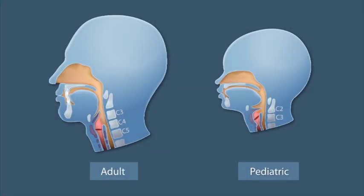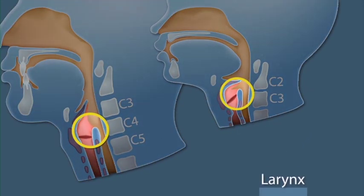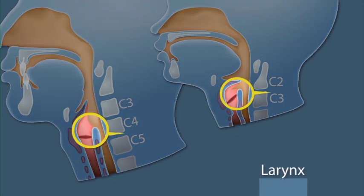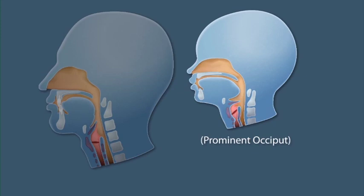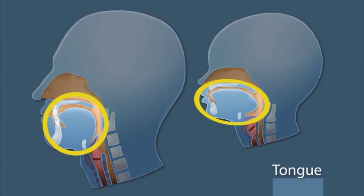Therefore, the approach to airway management of infants and children is influenced by developmental differences in head and neck anatomy. Understanding pediatric airway anatomy is a requisite, no matter the device used to manage the airway. Probably the most important difference is that the larynx is more cephalad in the infant and young child at C2-C3, whereas in the adult the larynx lies at C4-C5. In addition, the occiput is relatively large and the neck is short.